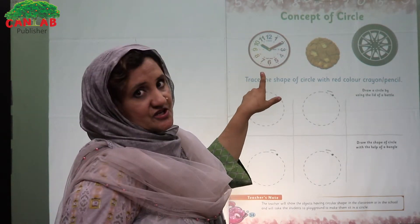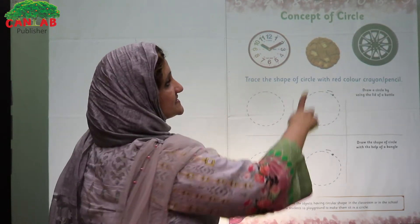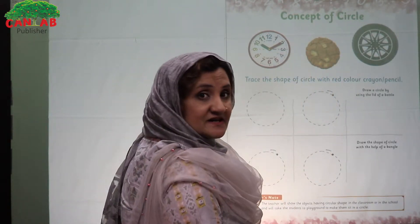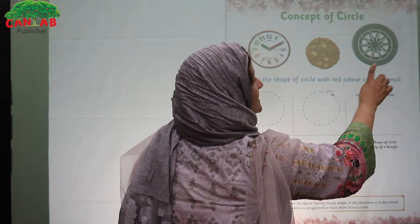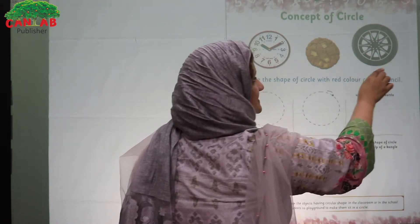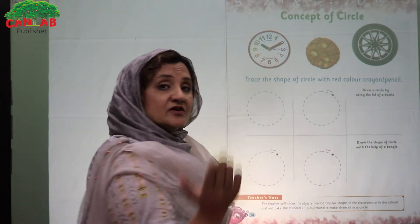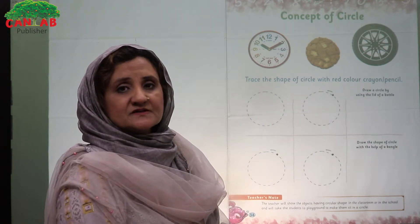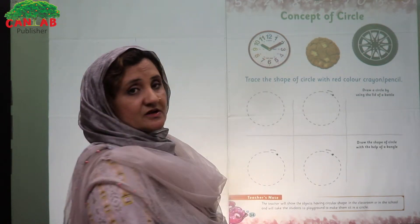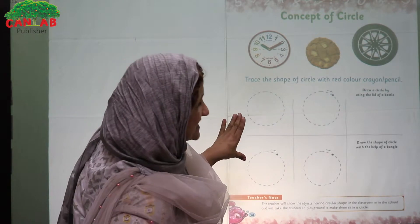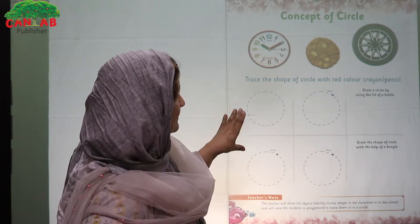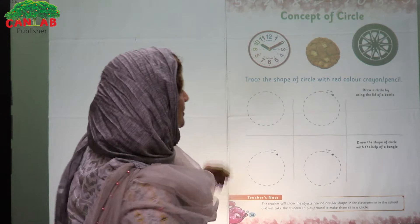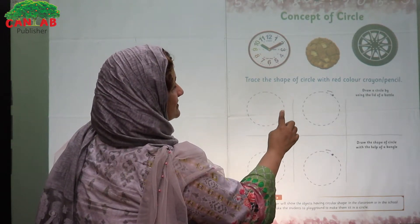Then open the book and ask them to read with you. This is a clock and it is of circular shape. This is a biscuit and it is also of circular shape. This is a wheel and it is of circular shape. Encourage them to give more examples of circular shapes.